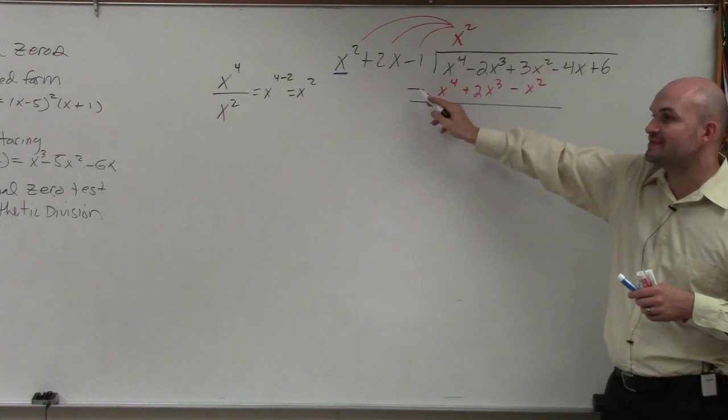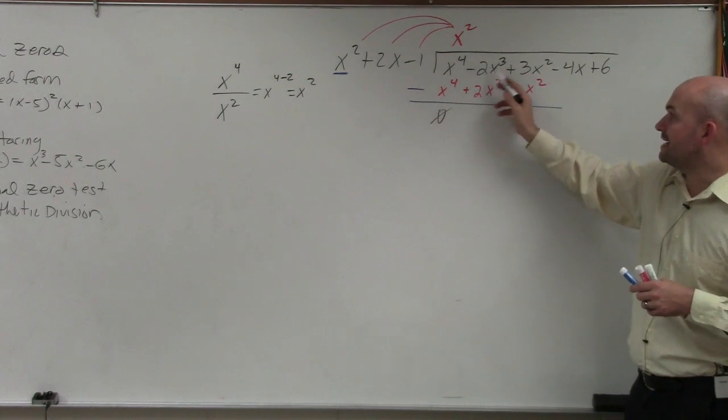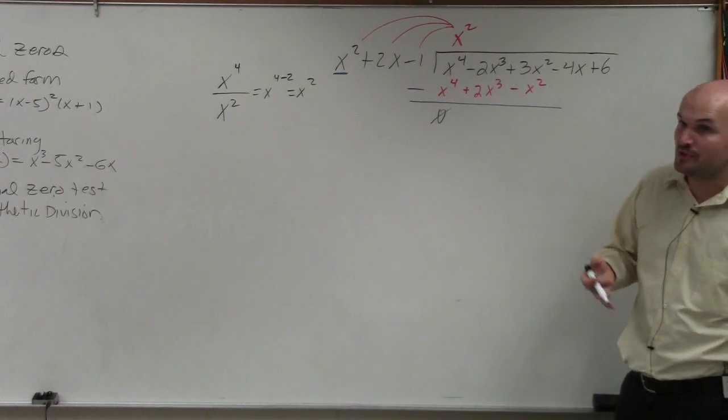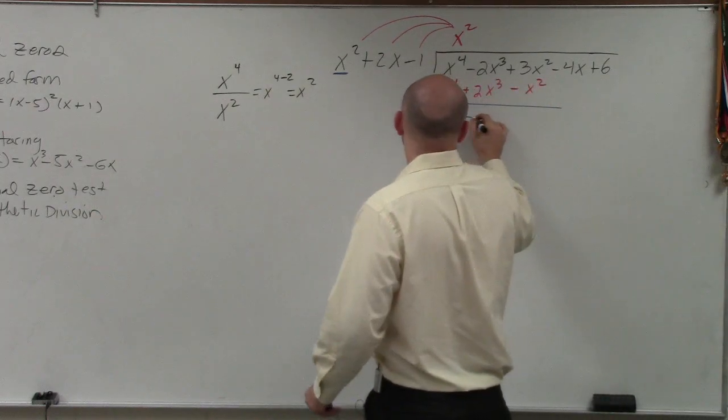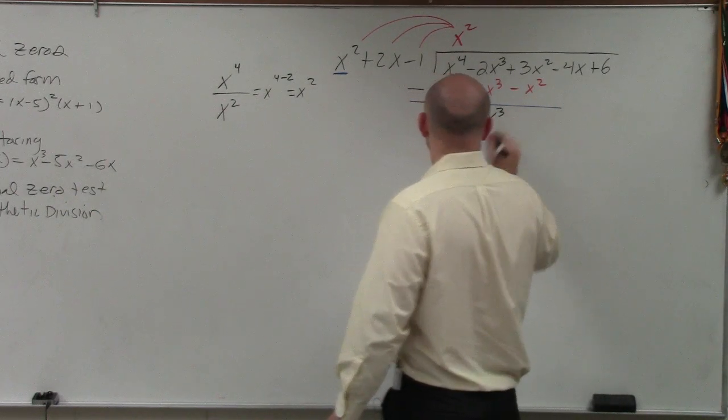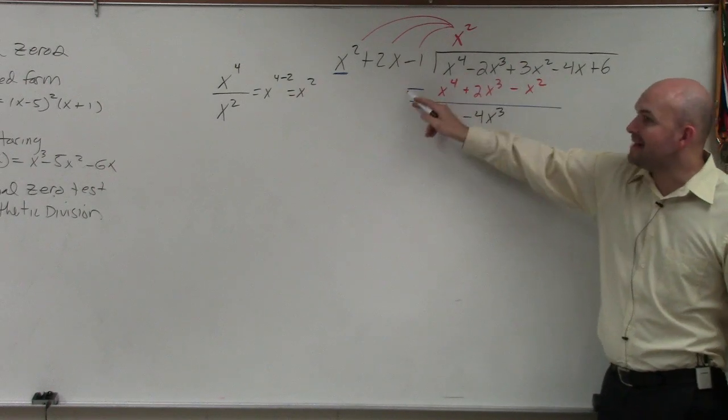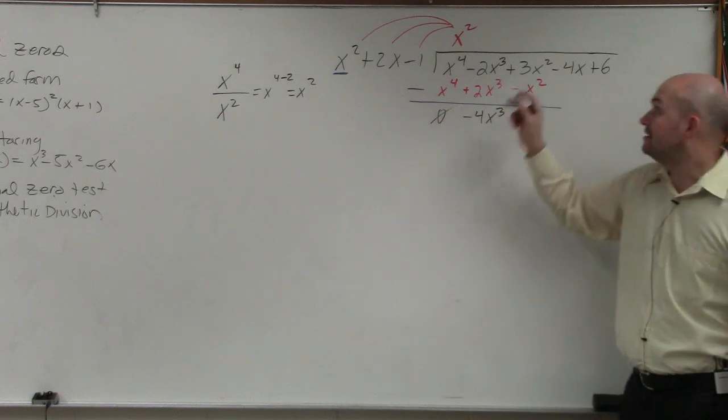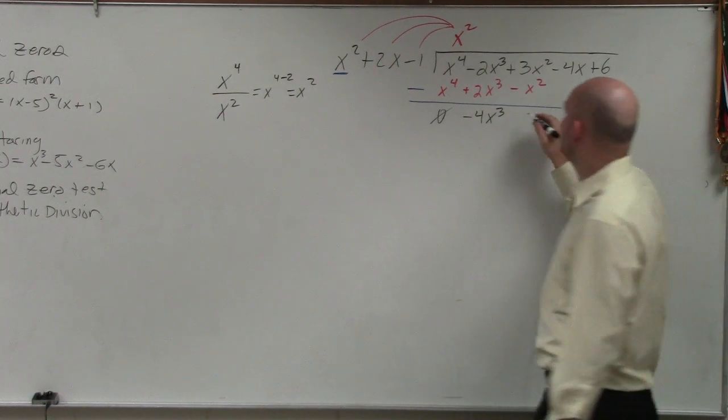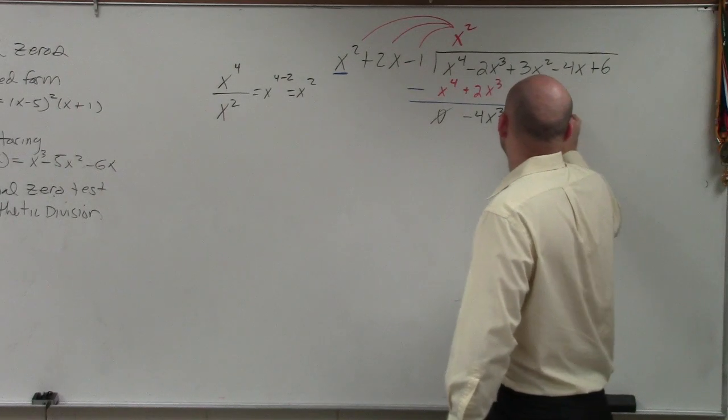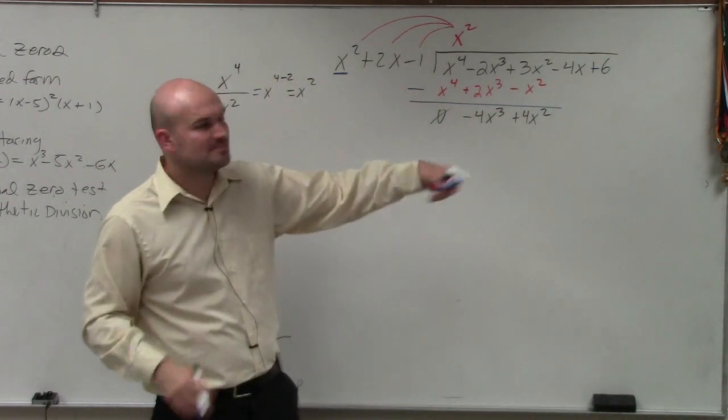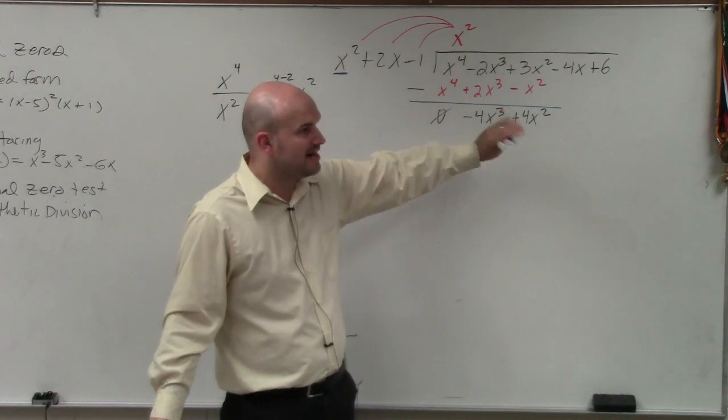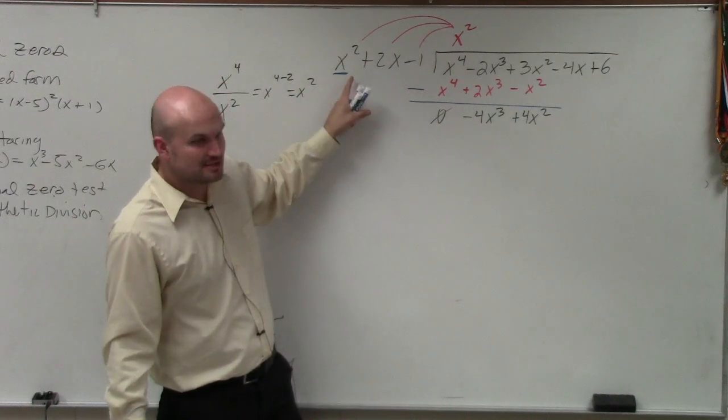x to the fourth minus x to the fourth is just zero, right? So we don't really do that. I'll just put it in. Negative 2x cubed, you always have to go back to the subtraction sign. Negative 2x cubed minus 2x cubed. You owe me $2. You borrow two more dollars. You now owe me negative 4x cubed. 3x squared minus a negative. Minus a negative makes it like adding, right? It's the same as adding. So in reality, that's going to be a positive 4x squared. Then you can bring down those terms, or you can just leave them up there and bring them down when you need them. That's the way I like to do it.